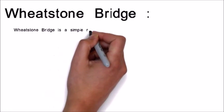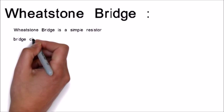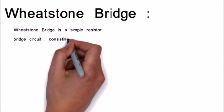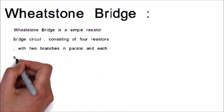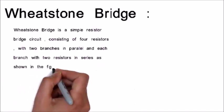Wheatstone Bridge is a simple resistor bridge circuit, consisting of four resistors, with two branches in parallel and each branch with two resistors in series as shown in the figure below.